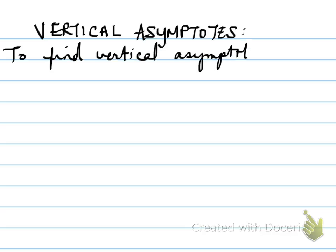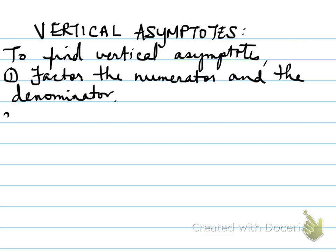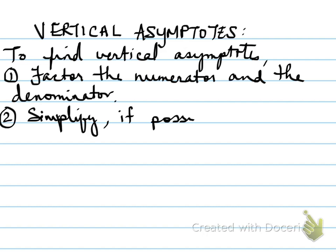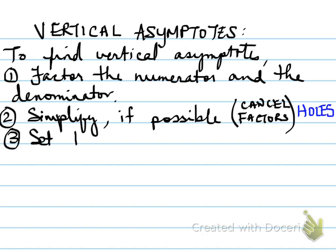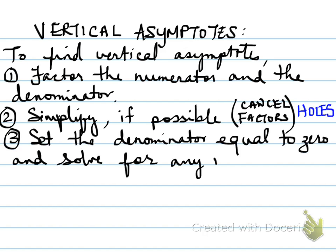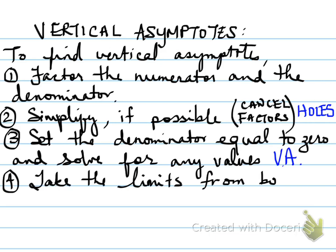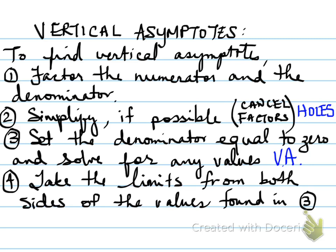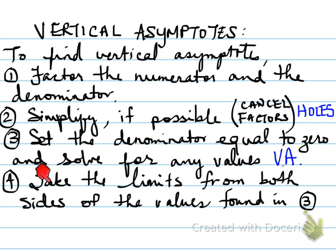To find a vertical asymptote, you must factor the numerator and the denominator, simplify, cancel any factors — which are known as holes — set the denominator equal to zero, and solve for any values. Then take the limits from both sides of the values found in step three. This is very important to find the vertical asymptote.